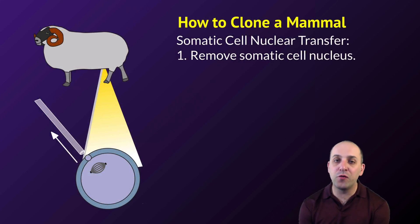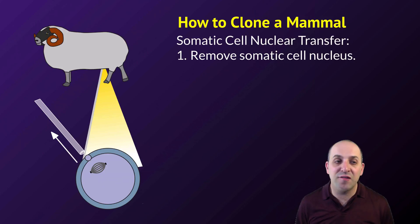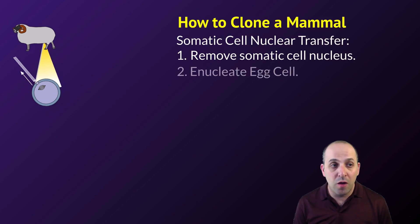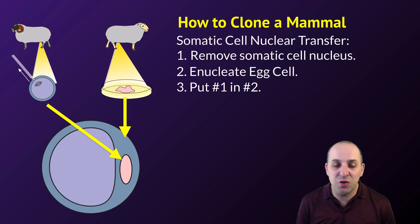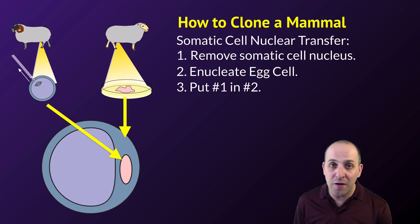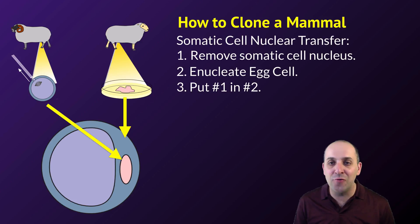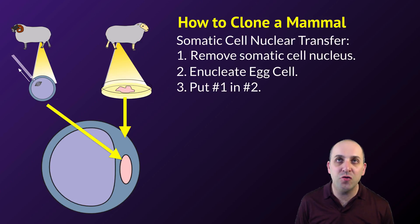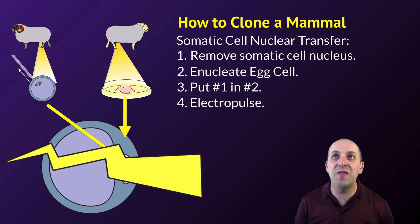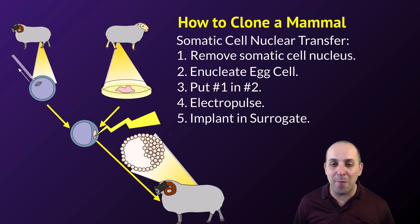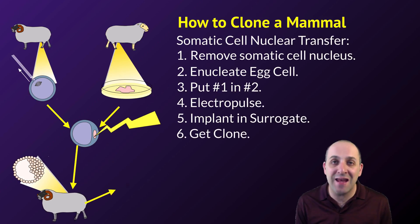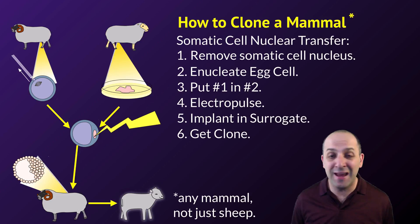Dolly was cloned through a process known as somatic cell nuclear transfer. The nucleus of a somatic cell is removed from a donor animal. The nucleus of an egg cell is also removed and discarded. You then place the nucleus from the somatic cell into the egg cell. Somatic cell nuclei are diploid and have all the genetic material necessary to give rise to an organism — they don't need to be fertilized. What does need to happen is that the egg cell needs to be tricked into thinking it's been fertilized, usually accomplished by exposing it to an electropulse, which begins development. The developing embryo is then implanted into a surrogate, which brings it to term — giving you a cloned sheep, or any other sexually reproducing animal, including primates.